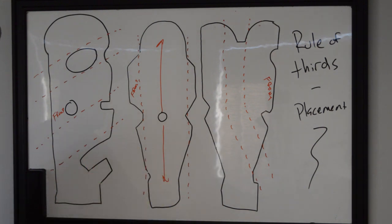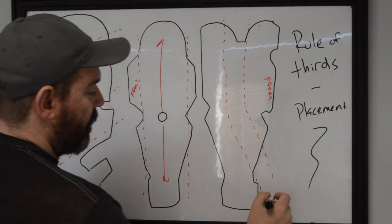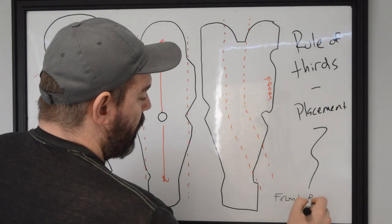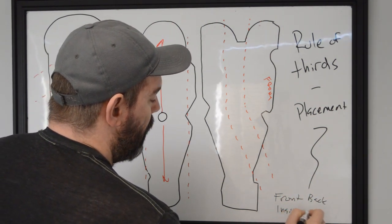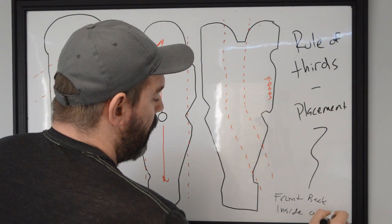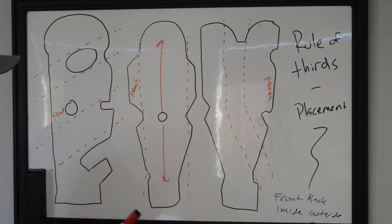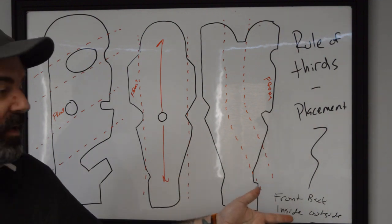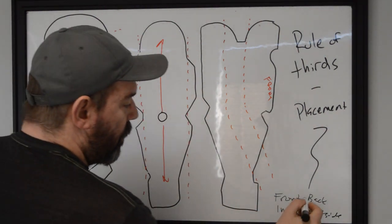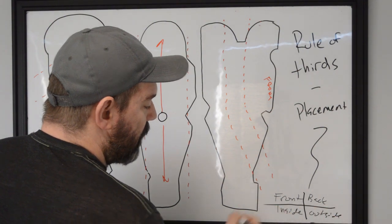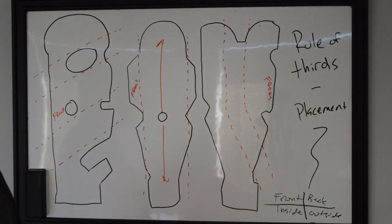More often than not, when I'm working with a client, I'm thinking about those four distinct spaces, right? We have the front, the back, the inside, and the outside. And when we think about a tattoo like that, we're making it 3D, right? And if it's 3D, we're going to have to put something that we want people to look at in each one of those quadrants.